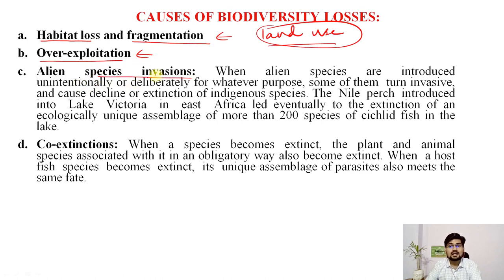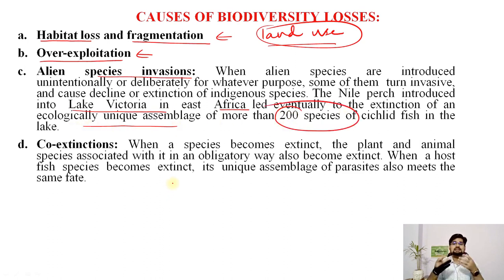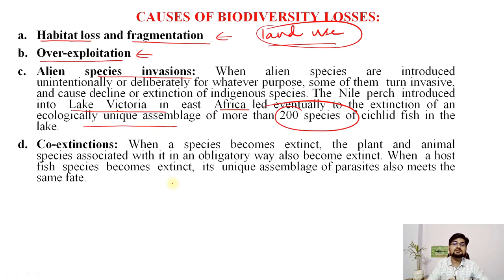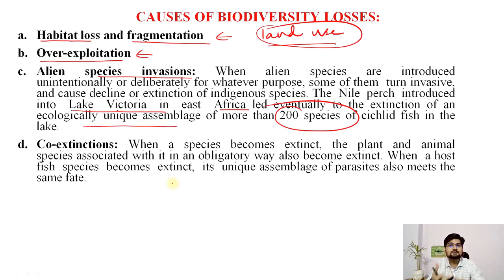Alien species invasions also occur. For example, the Nile Perch introduced into Lake Victoria in East Africa led to the extinction of an ecologically unique assemblage of more than 200 species. Sometimes, without understanding ecosystem logic, we plant a particular tree with good intent but don't realize it may be an alien species. The eucalyptus plantation in India is a classic example — eucalyptus is alien to the Indian subcontinent and many areas where it was planted turned into degraded lands because it absorbs large amounts of water.